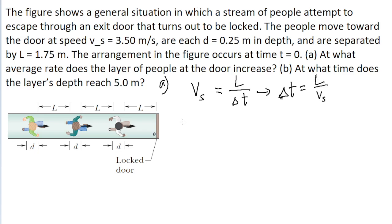That said, part A of the problem is actually asking for the rate at which the layer of people is increasing. So I'll call that rate R. And another way to think about what the problem is actually asking for is that it's asking for the speed at which a person's depth is being added.